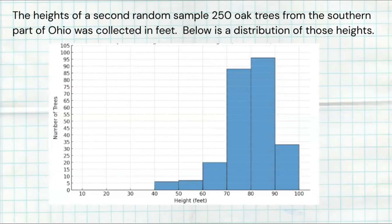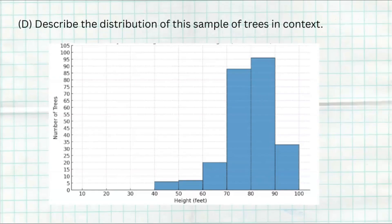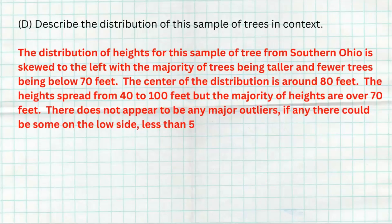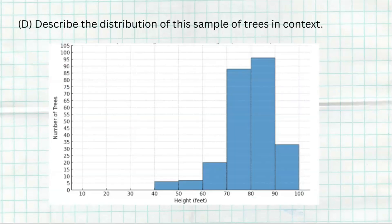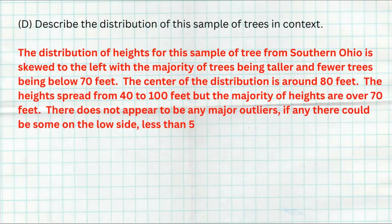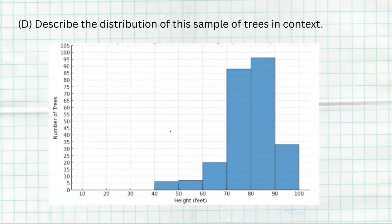Next up is another histogram, but this time we're looking at 250 oak trees measured from southern Ohio. Below is the distribution of those heights. The first is to describe the distribution of the sample of trees in context. We already did one of these, but you really need to practice it. I said that the shape was definitely skewed to the left. We see the majority of trees that are kind of on that taller range. Fewer trees are below 70 feet. The center of the distribution I said was around 80. The heights spread from 40 to 100, but the far majority of the heights are over 70 feet. And then I mentioned there does not appear to be any outliers. Maybe these ones down here potentially could be outliers, but I don't know for sure. Maybe these five or four or six that are down this bottom bin could be outliers, but not 100% sure, but worth mentioning it's possible.